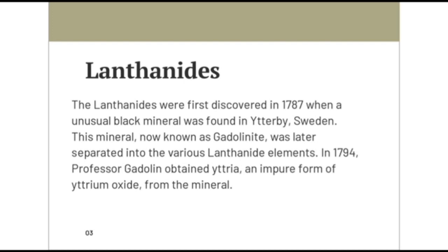Now let's talk about how lanthanides were discovered. They were first discovered in 1789 when an unusual black mineral was found in Ytterby, Sweden. This mineral was known as gadolinite, which was later separated into various lanthanide elements that are now present with different names. Then later on in 1794, Professor Gadolin obtained yttria, an impure form of yttrium oxide, from that mineral.